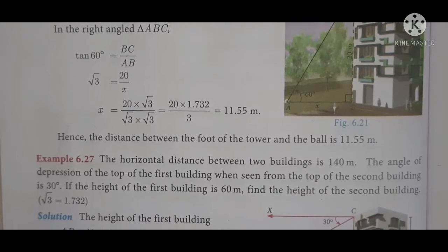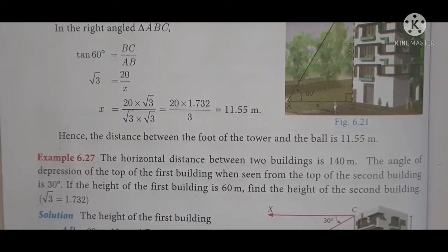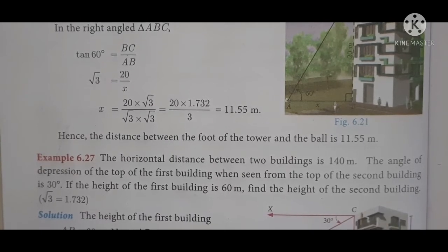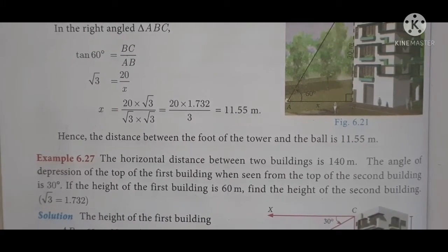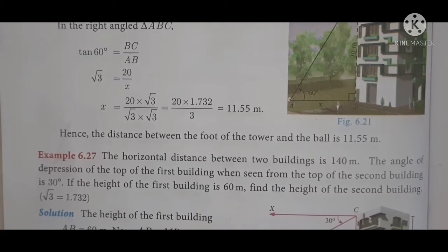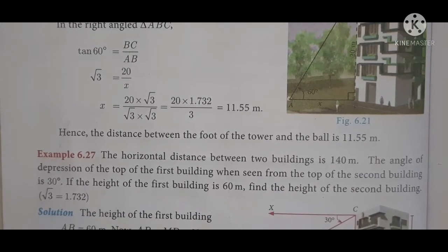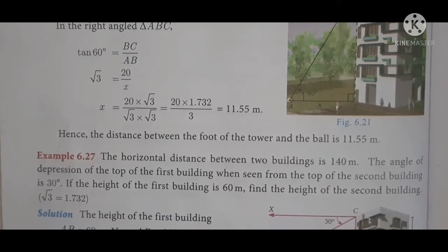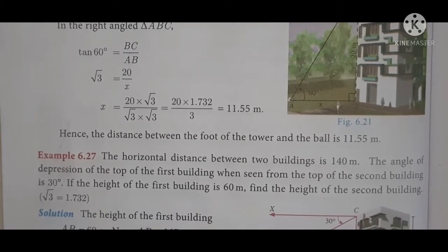Example 6.27: The horizontal distance between two buildings is 140 meters. The angle of depression of the top of the first building, when seen from the top of the second building, is 30 degrees. If the height of the first building is 60 meters, find the height of the second building using √3 = 1.732. In this problem, two buildings are given. The distance between them is 140 meters, and we need to find the height of the second building.